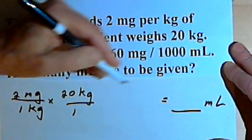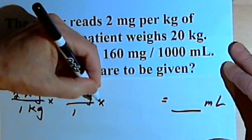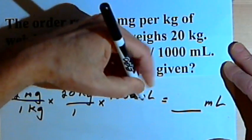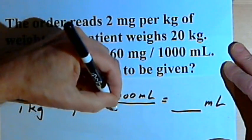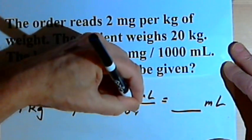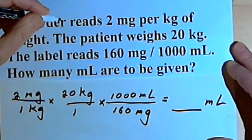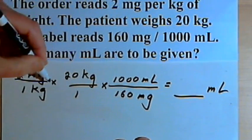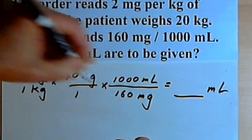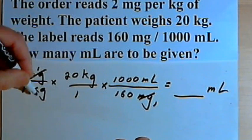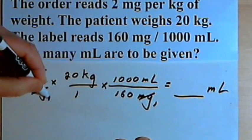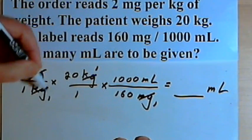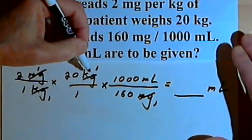Since I want to end up with milliliters in my answer, I'll write the on-hand as a fraction with milliliters in the numerator: 1,000 ml over 160 mg. Now let's cancel out whatever units we can. We've got milligrams in the numerator and milligrams in the denominator, so they cancel. We've got kilograms in the numerator and kilograms in the denominator, so they cancel too.